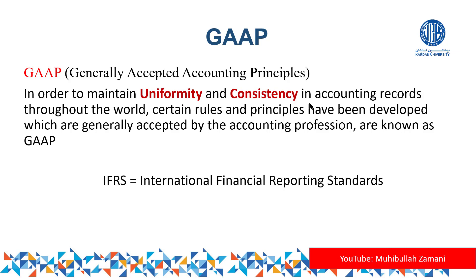In order to maintain uniformity and consistency in accounting records: uniformity means the same rules should be applied by country A, country B, country C, and country D; and consistency means the same rules should be continued for several years. If all countries use the same thing, certain rules and principles have been developed — this set of rules and regulations can be called GAAP.